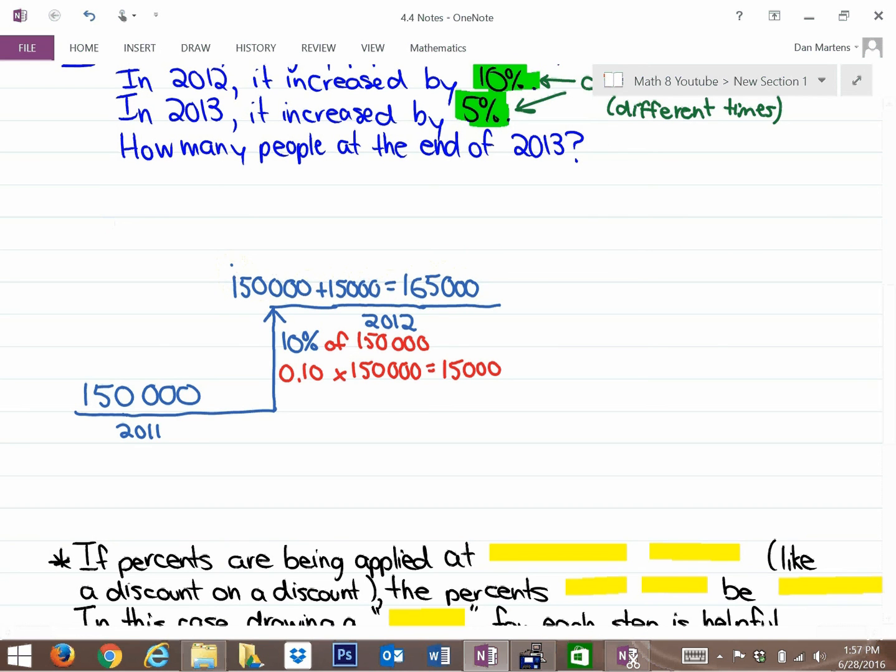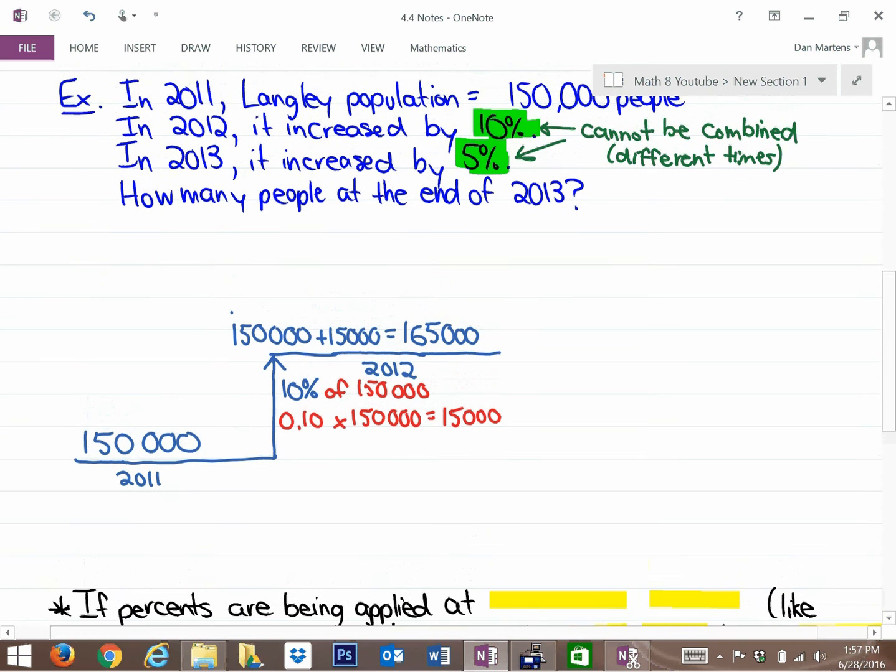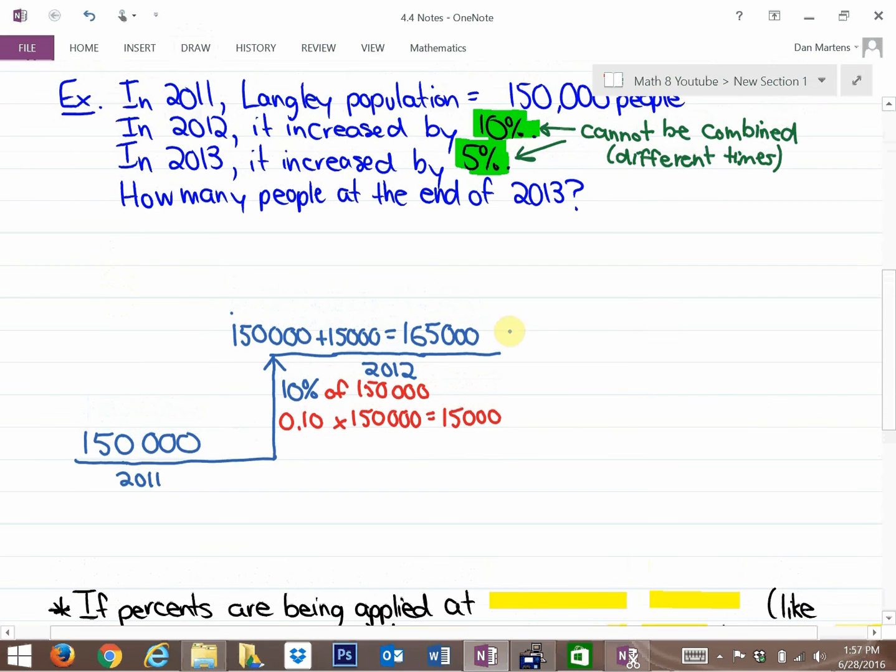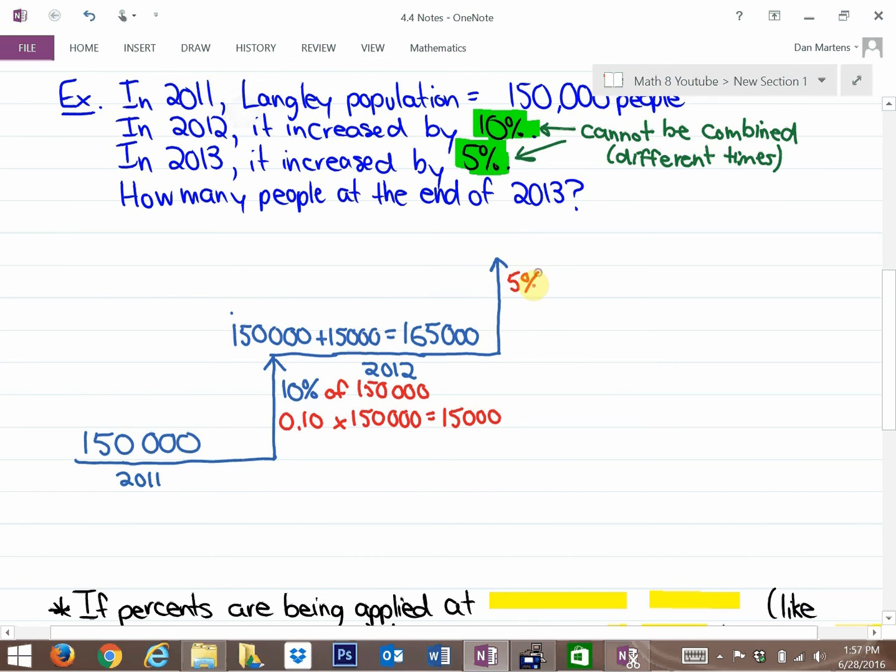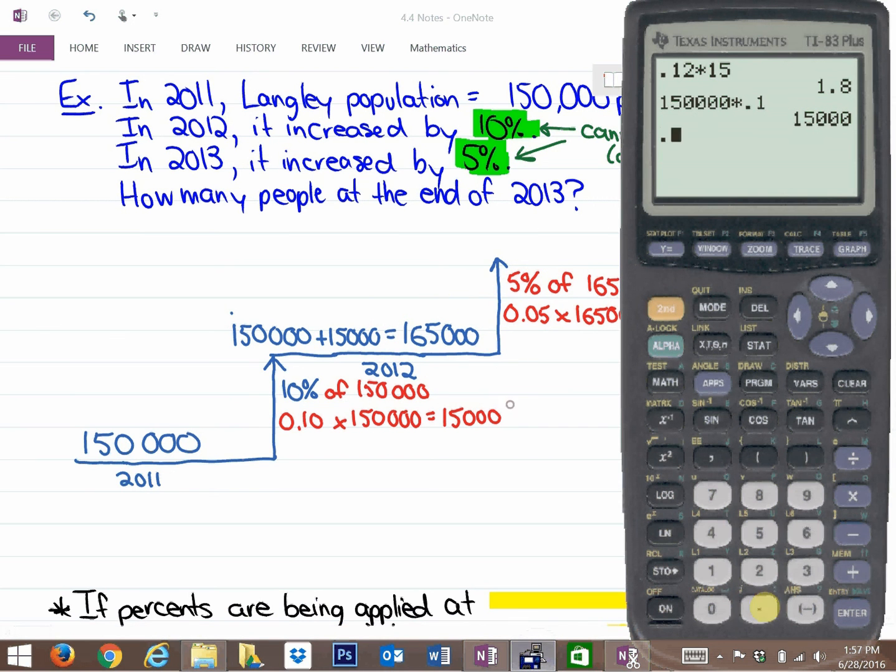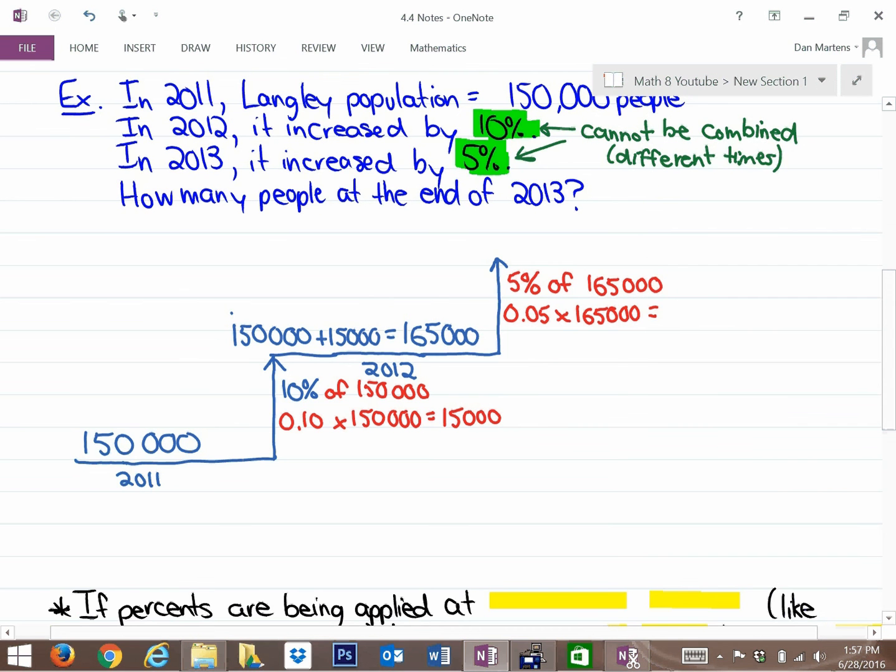But the population in 2012 is 165,000. Now the next part of the question says in 2013 it increased by 5%, so we have to have a 5% increase. That 5% increase is being applied to the 165,000 people. So we need to find out 5% of 165,000. 5% as a decimal is 0.05, and 5% of 165,000 people is equivalent to 8,250 people.